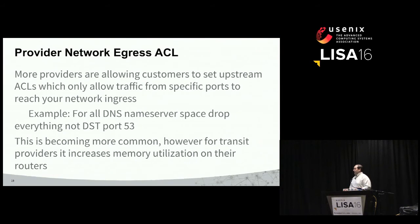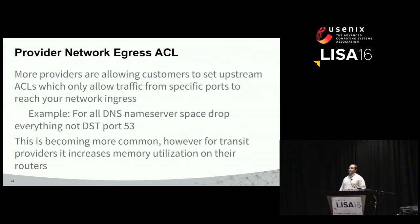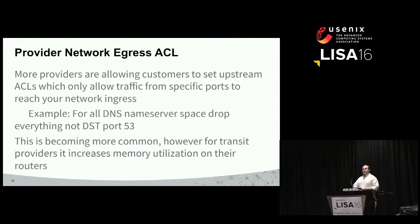A lot of people in the room might be thinking: how is that not something that's always been available? It turns out that memory on the routers used by those providers is pretty expensive, and maintaining such a large table can be a problem. With advances in technology, this is something that's more recently become available based on who you're purchasing transit from. It's funny to think about in the Amazon Web Services world where you can just log on and configure what traffic you'll allow into your ports — you'd assume this level of ACL would be ubiquitous. Kind of not really, but on its way to becoming that.